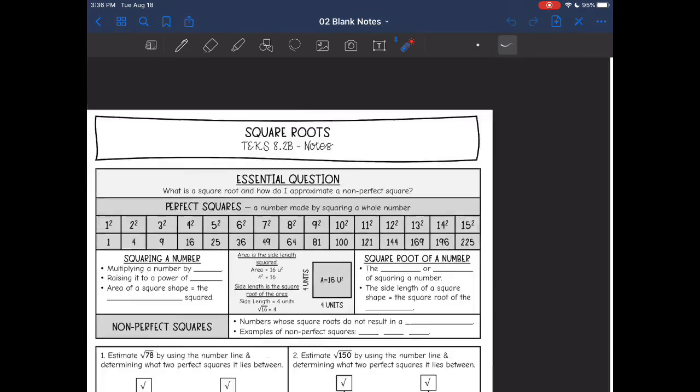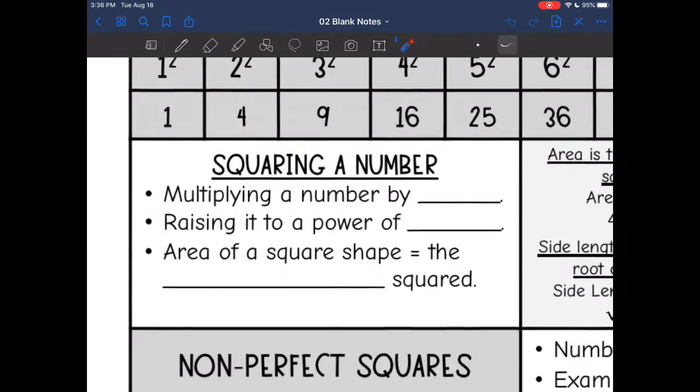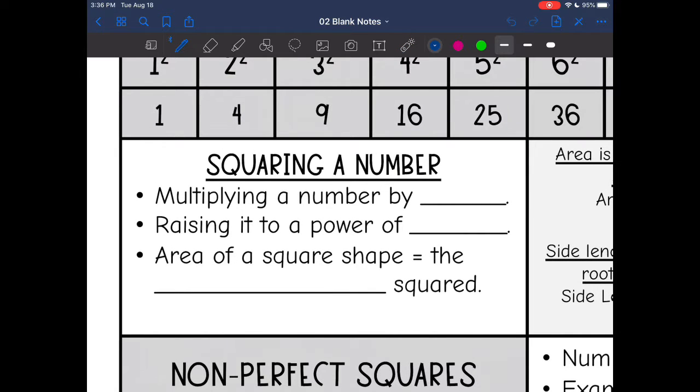Before we can get talking about square roots, we need to talk about squaring a number because the square root is the opposite of that. Squaring a number is multiplying a number by itself, or you could think of it as raising it to a power of two. When we think about the area of a square shape, it is just the side length squared.